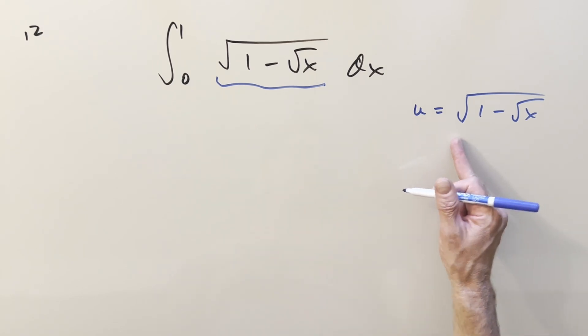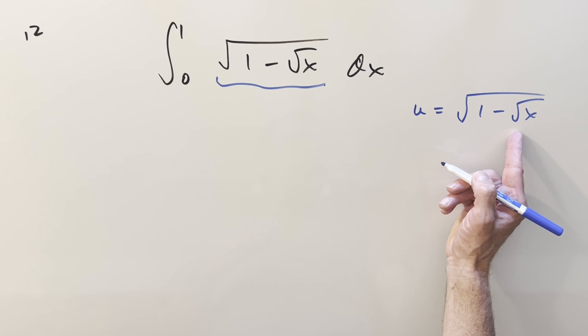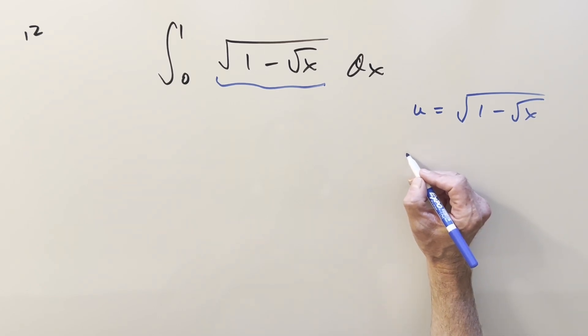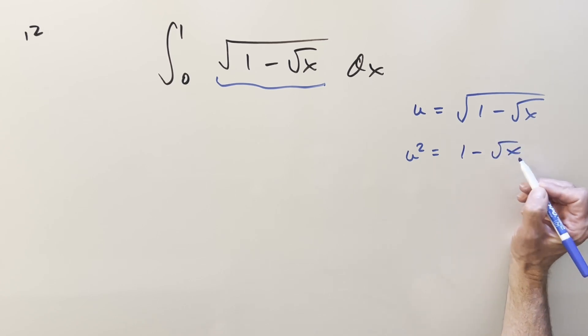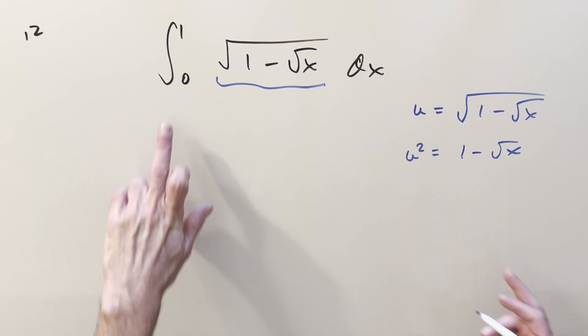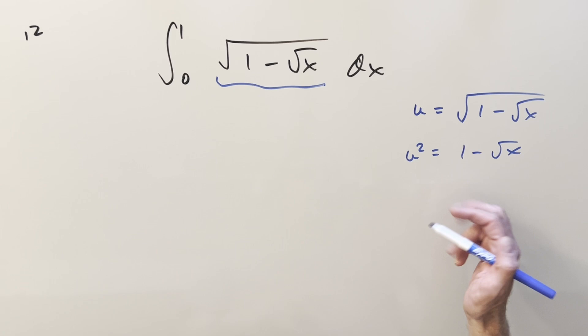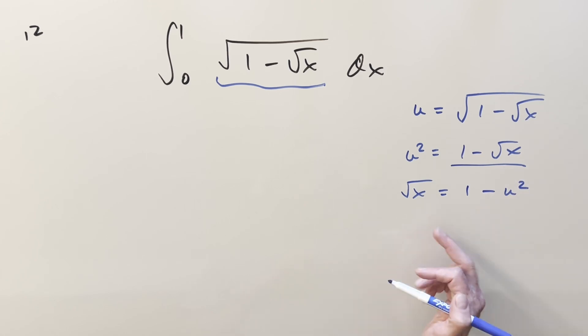And just because the derivative of that seems like a mess, so let's solve for x. To do it, first square both sides. What you get is u squared equals 1 minus square root of x. Of course, I'm dropping absolute value. Notice our x values are between 0 and 1. This is always positive. Rearrange this. Square root of x equals 1 minus u squared.